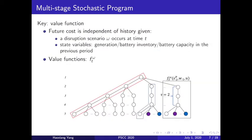We can still use a multi-stage stochastic program to model such stochastic disruption. The key is to identify the value function in this problem. The value function will represent the future cost and it is independent of the history given that a disruption scenario omega occurs at time t. So in this figure we can see this part of the tree represents that a scenario omega occurs at time period 2 and it will depend on where it stands at time period 2, which includes the generation, the battery inventory at time period 2, and the battery capacity set up at the very beginning of the time horizon. We denote the value functions as f_omega_t.